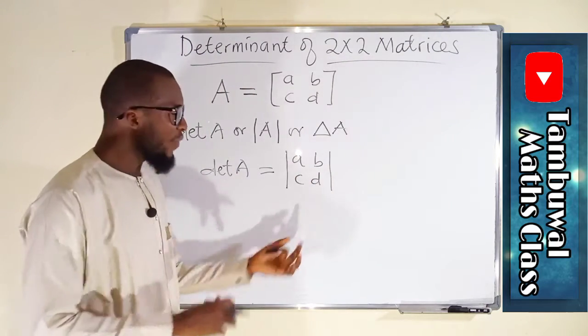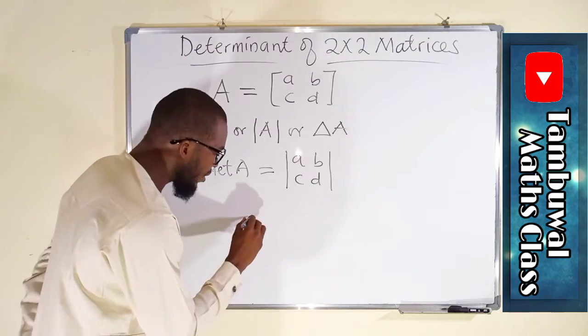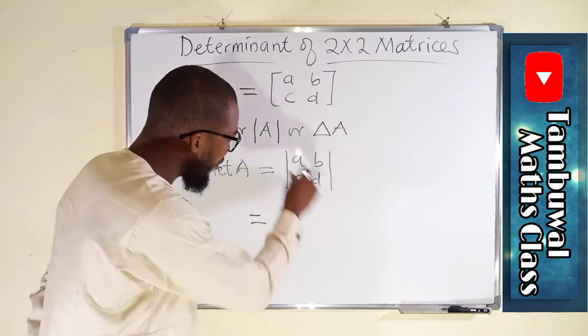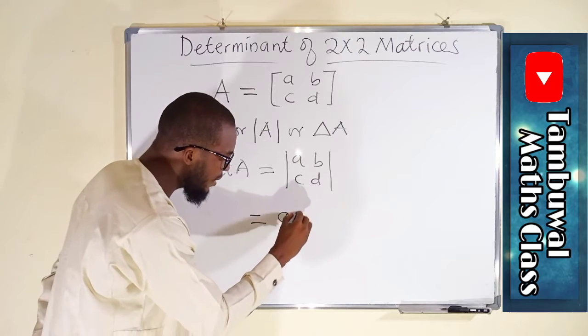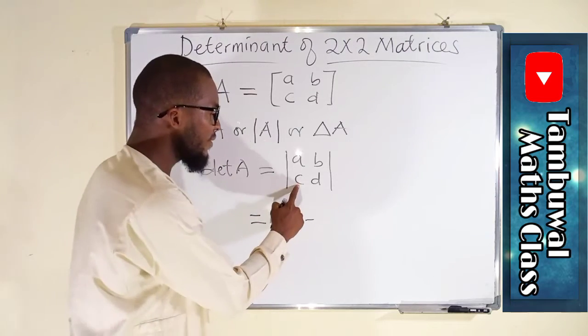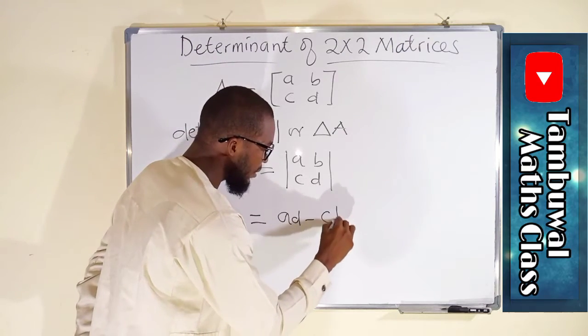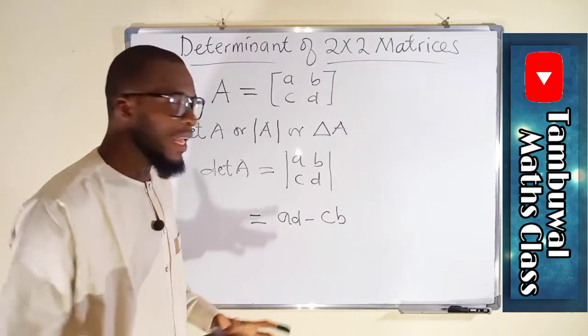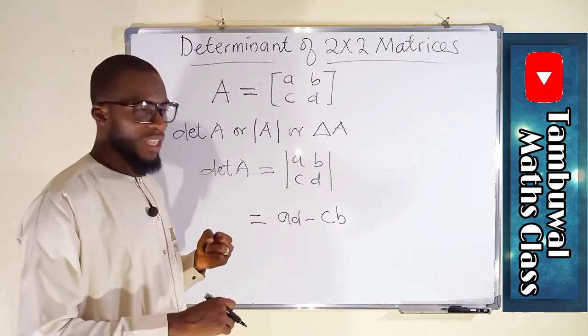So the question is how can we find the determinant of this matrix? To find the determinant of this matrix, we take the difference of the product of these diagonals. You take a, you multiply it with d, you have ad. You subtract, you take c, you multiply with b, we have cb. You simplify and obtain your scalar, and that scalar is said to be the determinant of this matrix A.